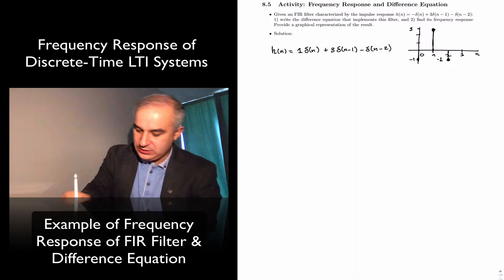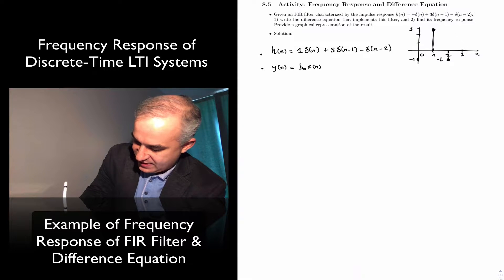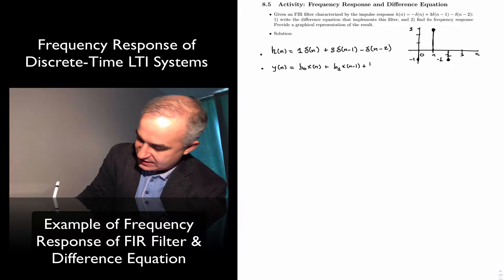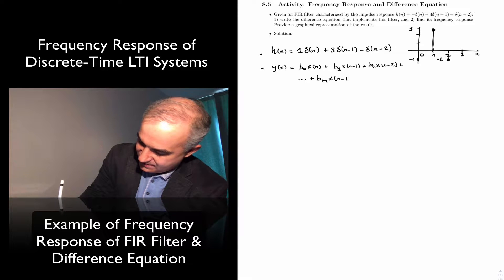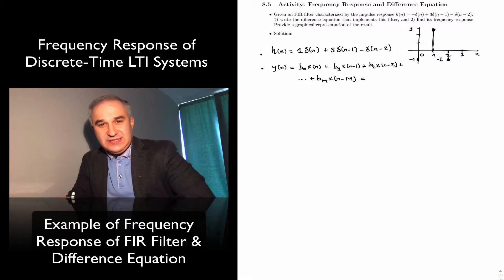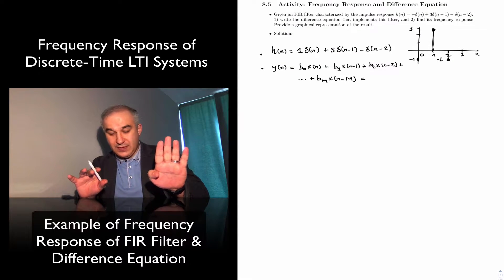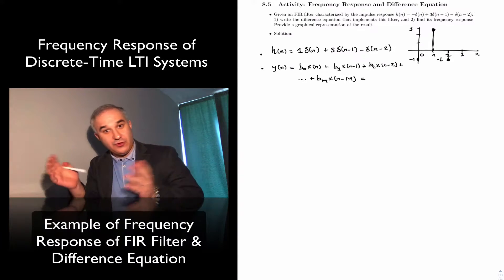Recall that an FIR filter has a difference equation of the form b0·x(n) plus b1·x(n−1) plus b2·x(n−2) plus ... plus bM·x(n−M). This is just like a dot product of two vectors — the b-vector times the x-signal vector for that segment, so a series of dot products or projections.